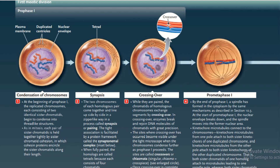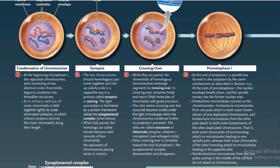Still in Prophase I, synapsis occurs: the two chromosomes of each homologous pair come together and line up side by side in a zipper-like way, in a process called synapsis or pairing. This tight association is facilitated by a protein framework called the synaptonemal complex. When fully paired, the homologs are called a tetrad because each consists of four chromatids — no equivalent of this chromosome pairing exists in mitosis. While they are paired, the chromatids of homologous chromosomes exchange segments by crossing over; enzymes break and rejoin DNA molecules of chromatids with great precision.